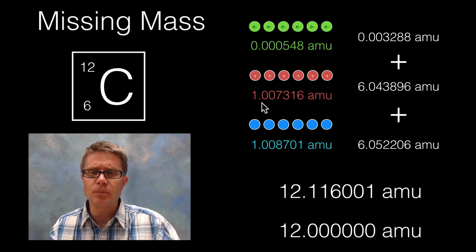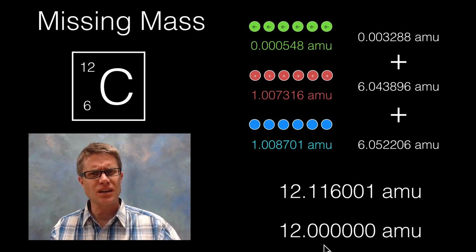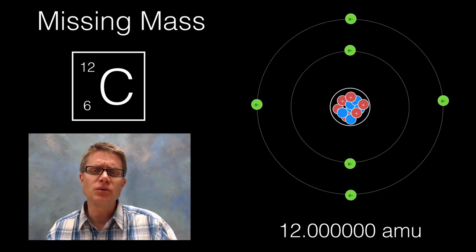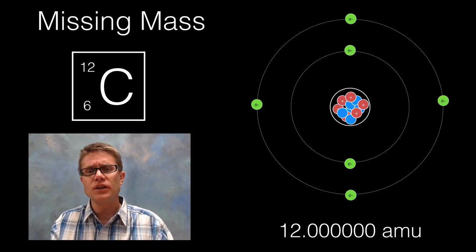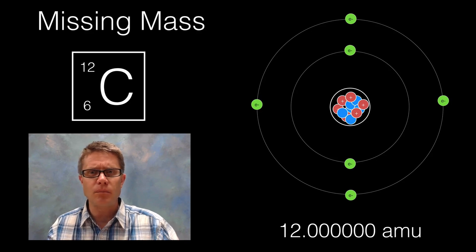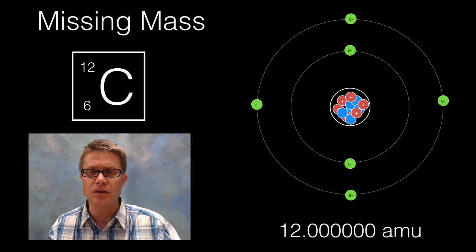In other words, if you break apart an atom, if you break it into its constituent parts, it actually has more mass divided than it did when it was altogether. And so where did the mass come from? And where will the mass go when we convert it back into that atom? Well it's used in the binding energy of the atom itself. And so when we convert that back into carbon 12 again, that mass is gone but it's been converted into energy that is holding that atom together.